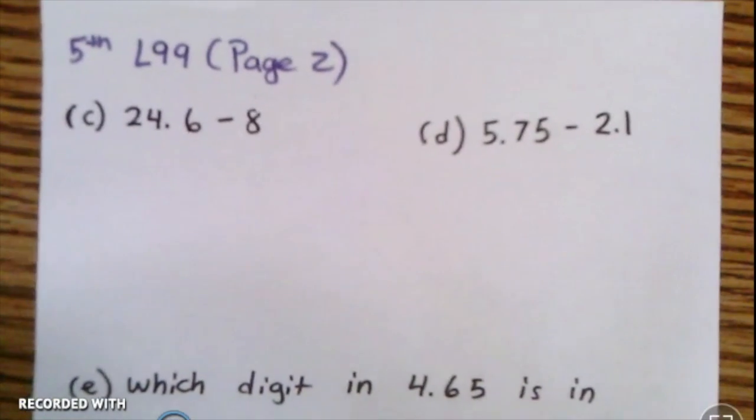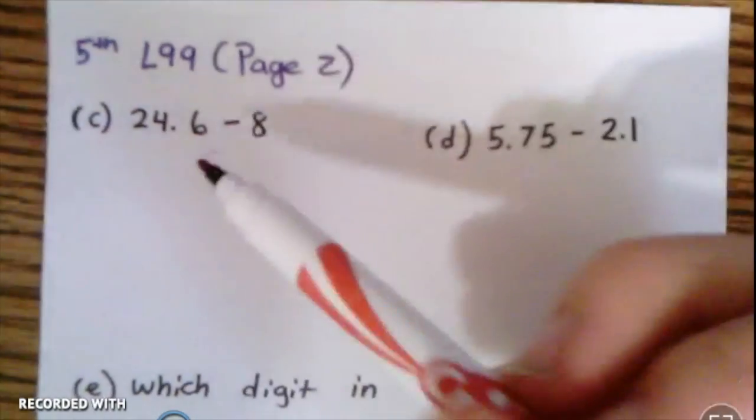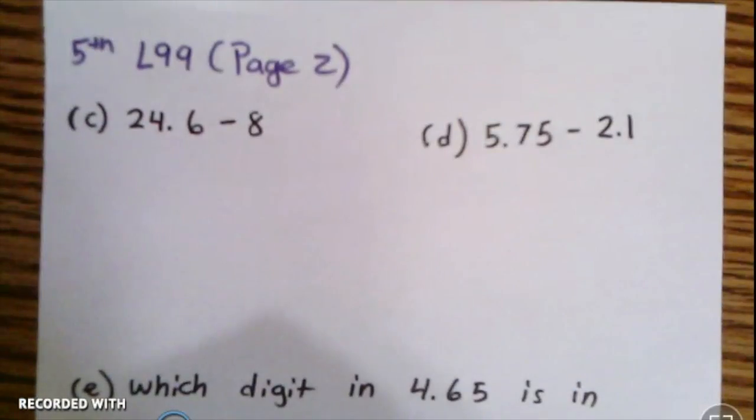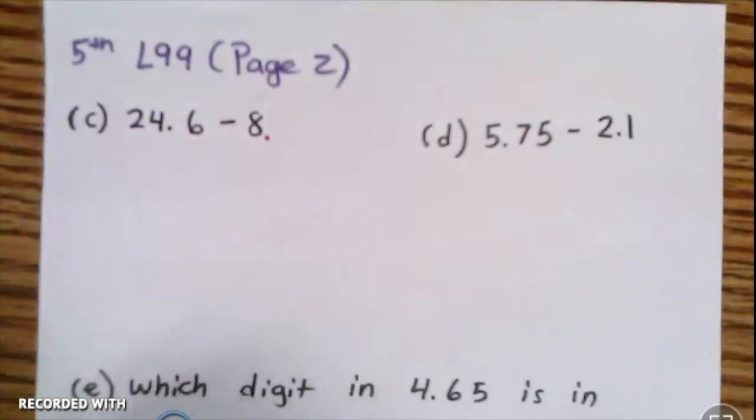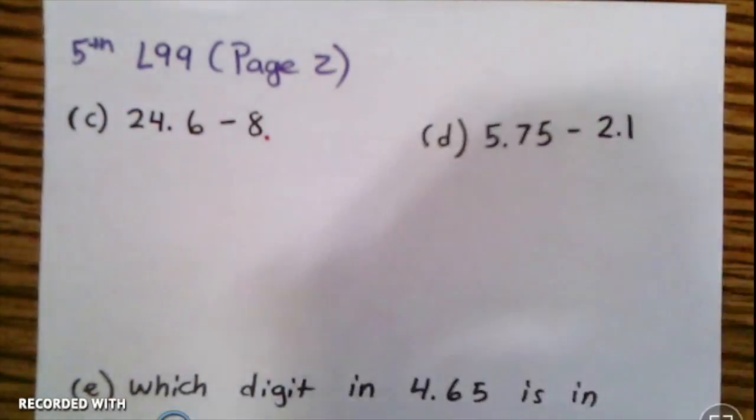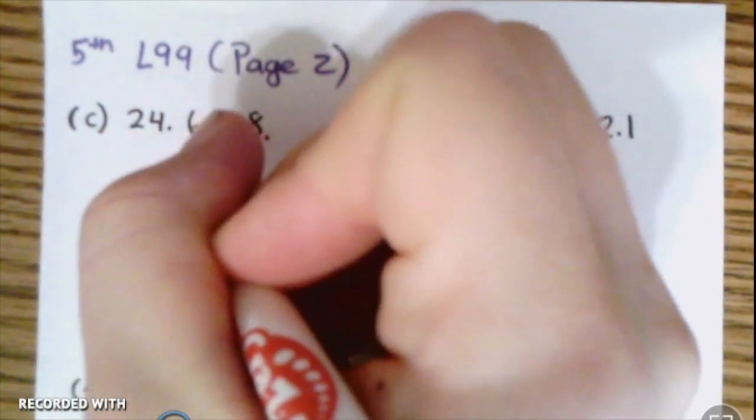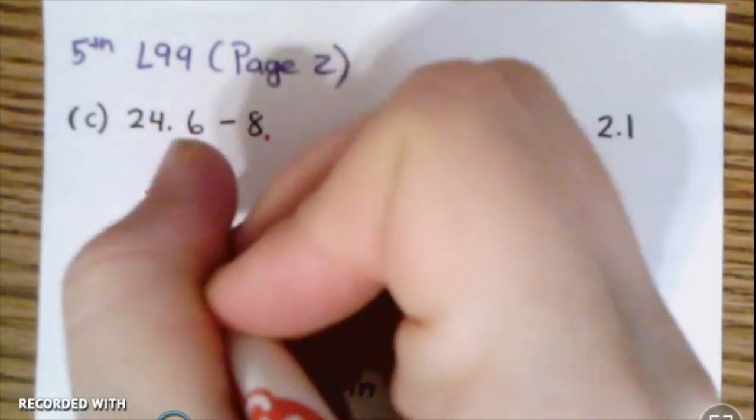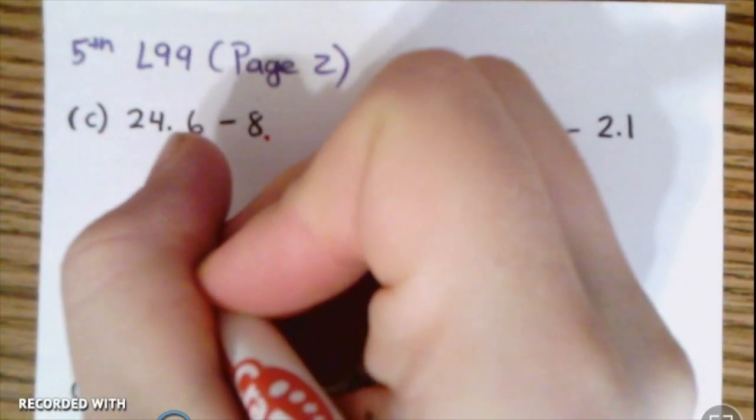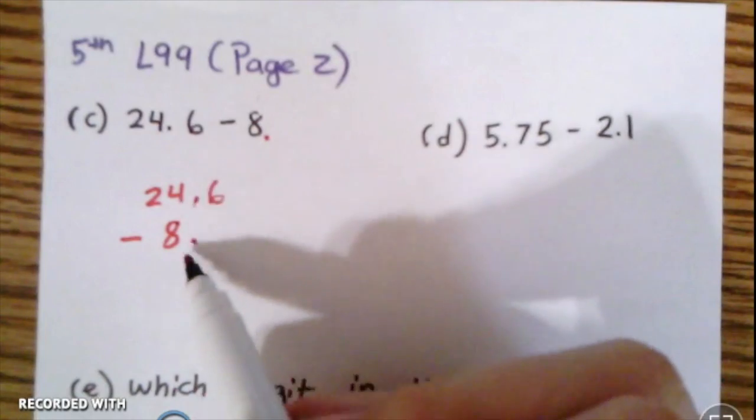Let's see how this works out here. We've got 24.6 minus 8. So do you remember what I said? Where will the decimal go in this number 8? Right there. My second step is to write these numbers vertically and to line up the decimals, which means the 8 is going to go here so that way the decimals are in line.